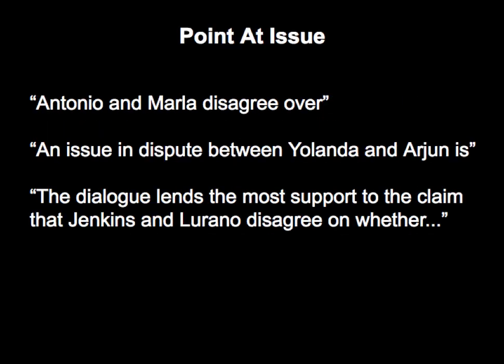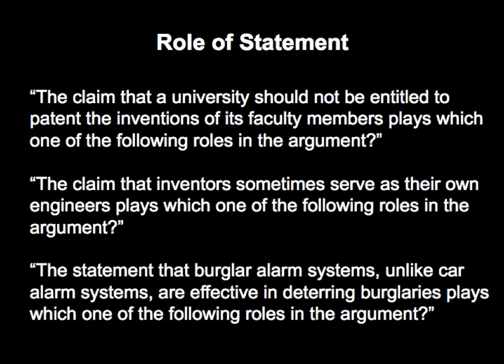For point at issue questions, you're looking for an answer choice where both parties express an opinion and those opinions differ — one person says yes, the other says no. Wrong answer choices often have one person expressing an opinion while the other expresses no opinion at all. Also look for where person B directly contradicts what came immediately before; the disagreement typically lies at the end of person A's statement and the beginning of person B's statement.